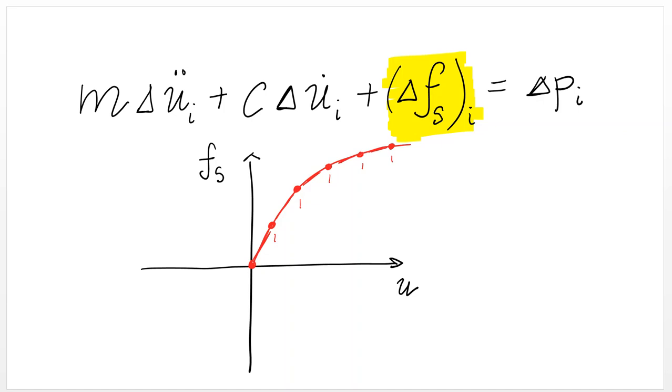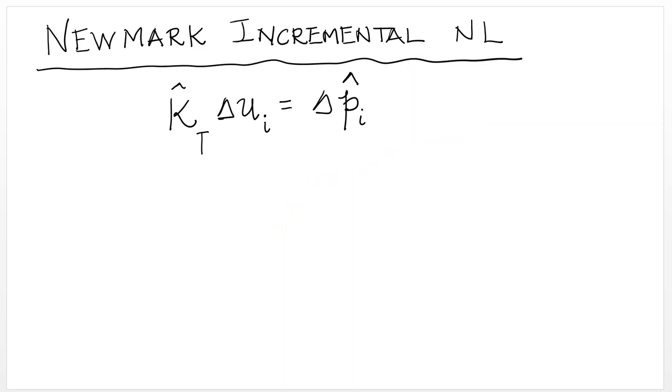Since the only thing we really know how to solve are linear problems, we are going to take an approach to solve the nonlinear equations of motion, which relies on sequential linearization. So how does this work?